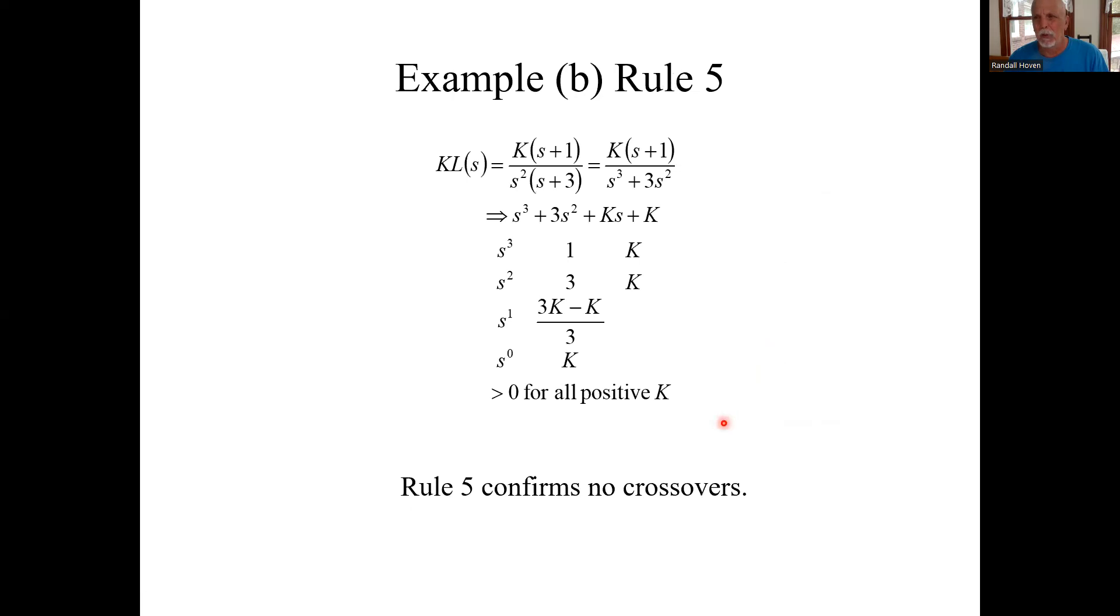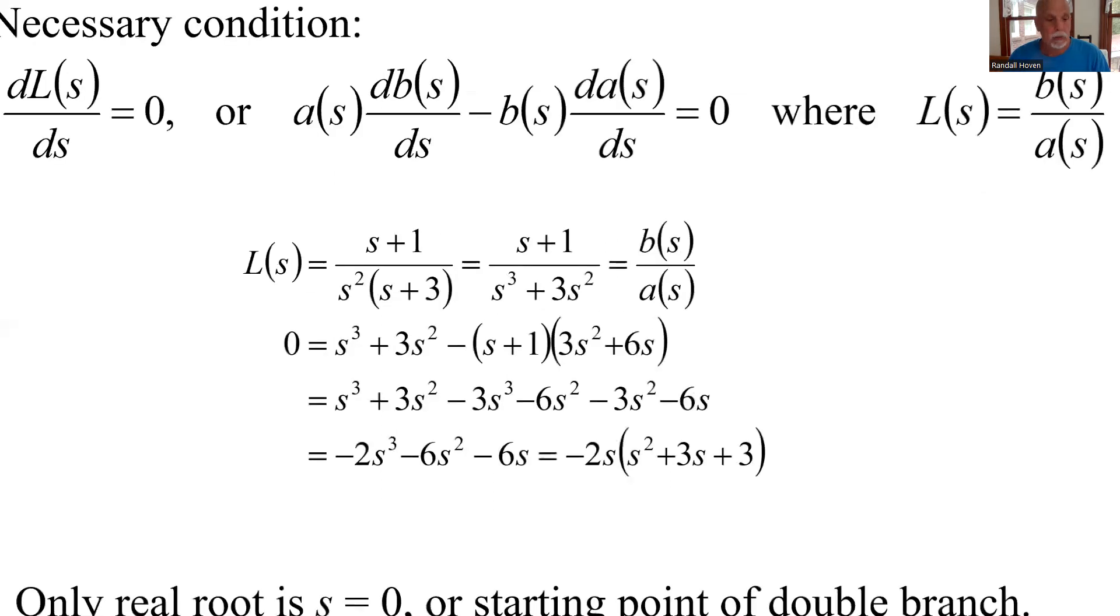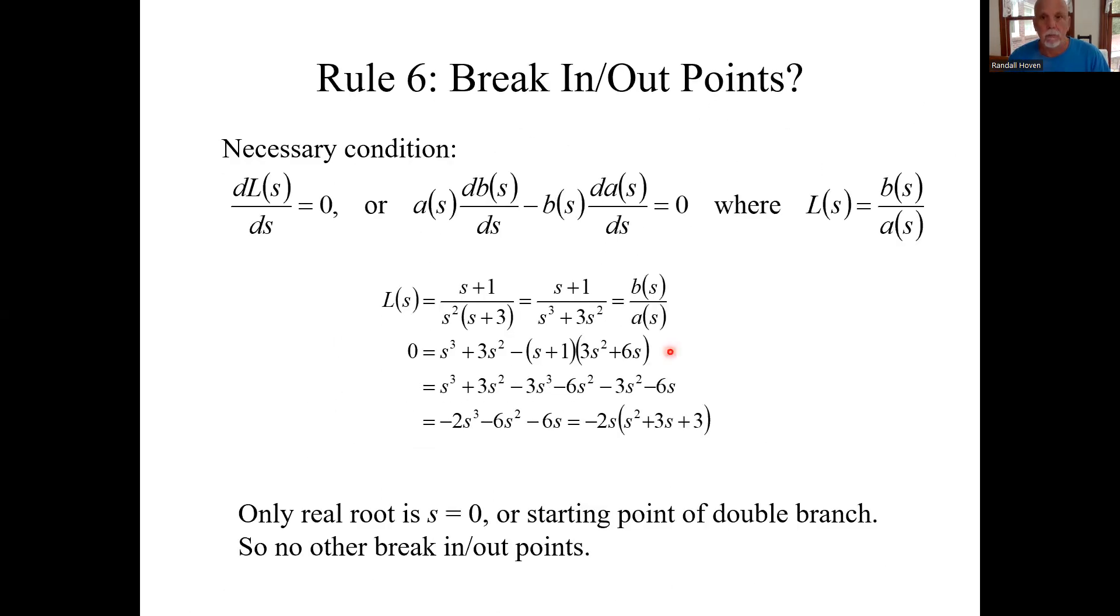I'm really not going to go through rule five. We already said it really can't happen. If you go through the Routh array thing, there's no positive K that's going to make anything in this first column zero. When K exactly equals zero, you get a zero there. And that's just that original double pole. Let's look at rule six. I won't go through the formula sheet. This up here is what's on the formula sheet. We apply it.